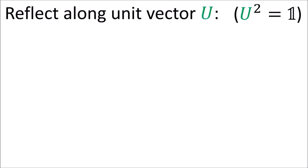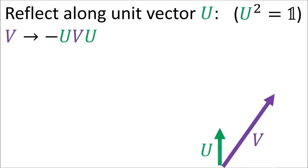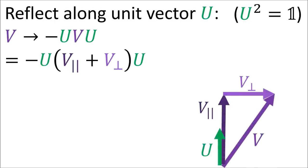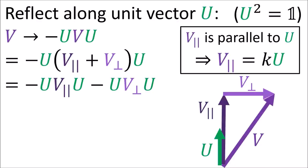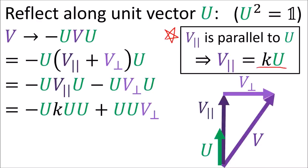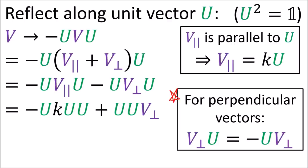Remember, since u is a polyvector of length 1, and squaring a polyvector gives its squared length times the identity matrix, u squared should just equal the identity matrix. To see that the reflection actually happens, let's negative conjugate v by a unit vector u. We can break up v into a portion that's parallel with u and perpendicular to u.